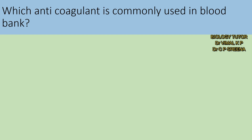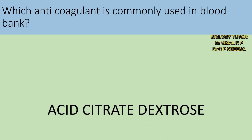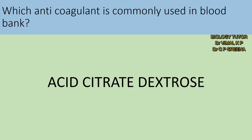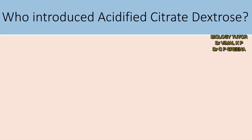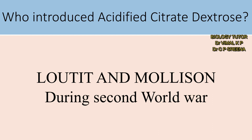Next question: Which anti-coagulant is commonly used in blood bank? Acid citrate dextrose (ACD) is most commonly used in blood bank. Two more anti-coagulants are also used in blood bank. Who introduced acid citrate dextrose? Loutit and Mollison during the Second World War used acid citrate dextrose for the first time.